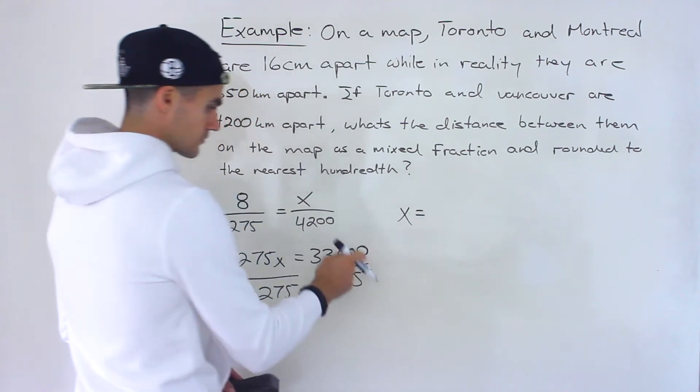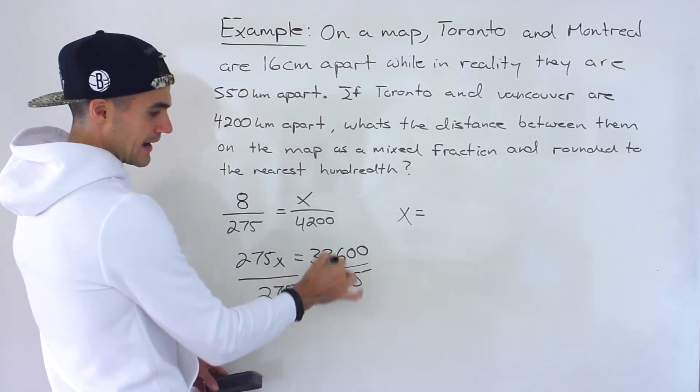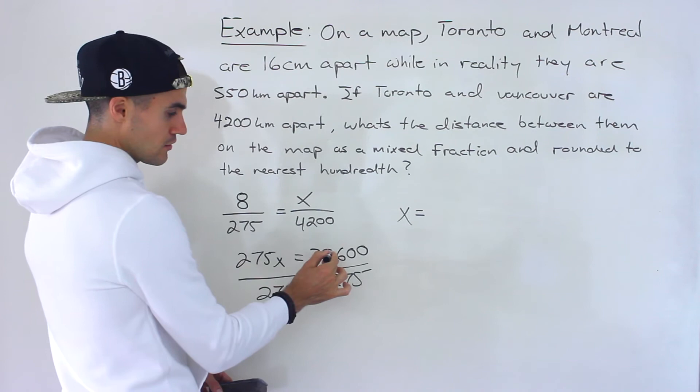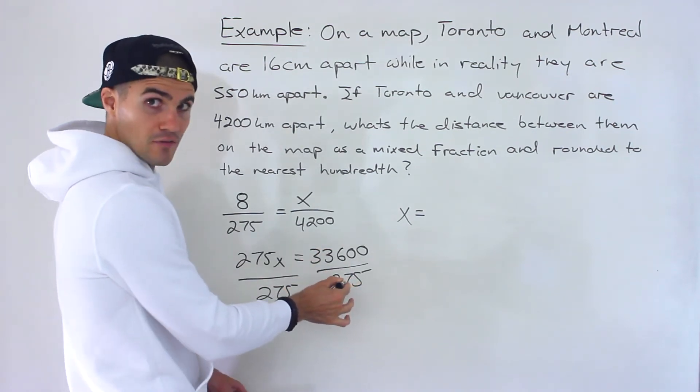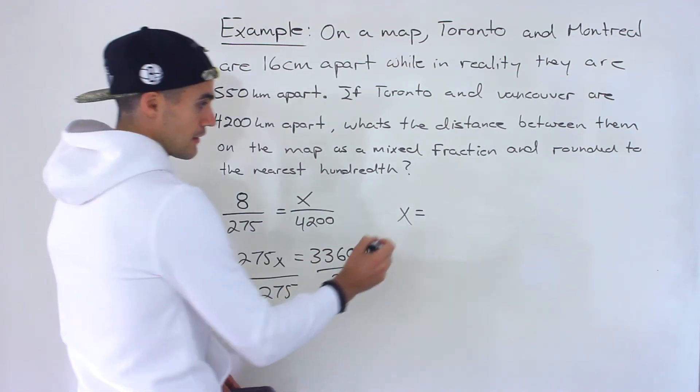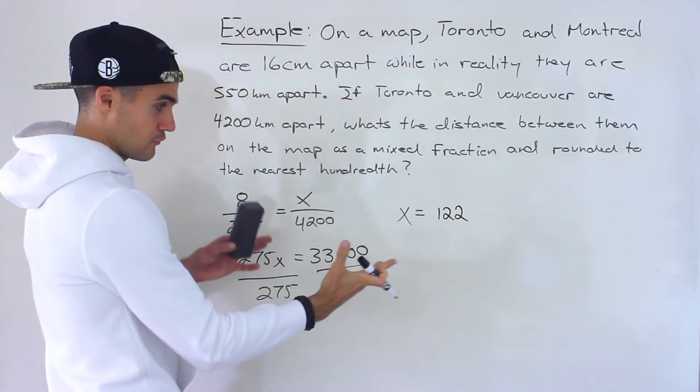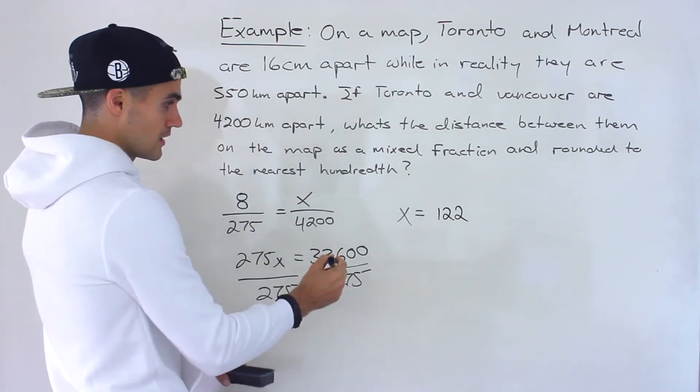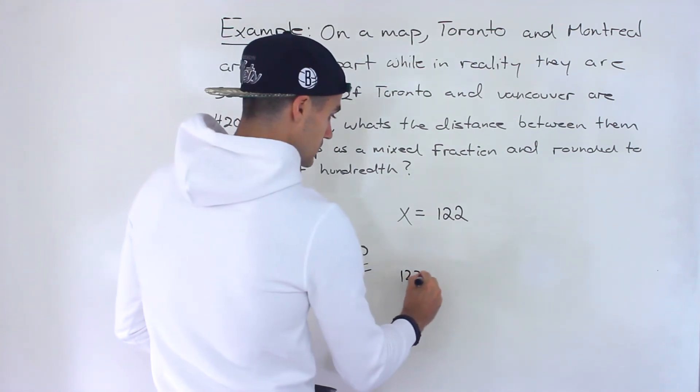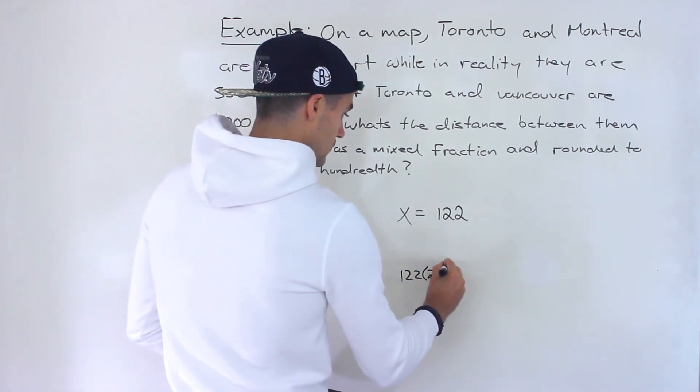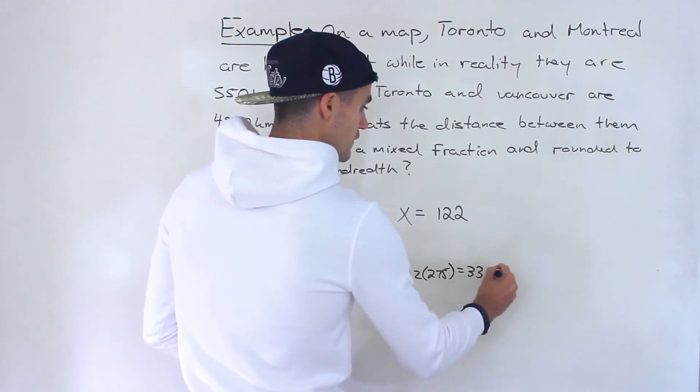Now over here to get it as a mixed fraction we could take 33,600 divided by 275 and that would give us 122 if we round it to the nearest integer. But then 122 times 275 would give us 33,550.